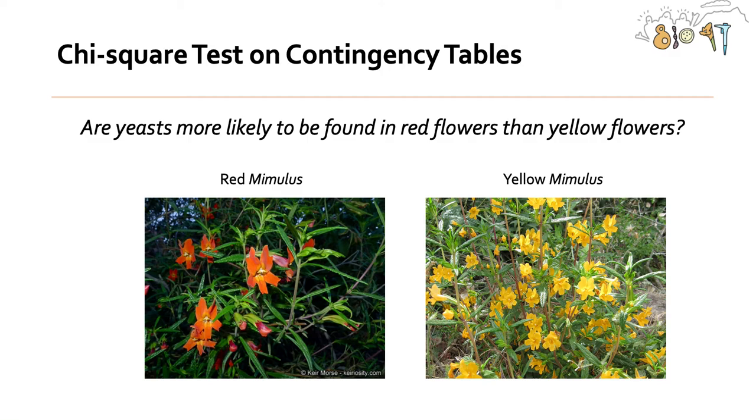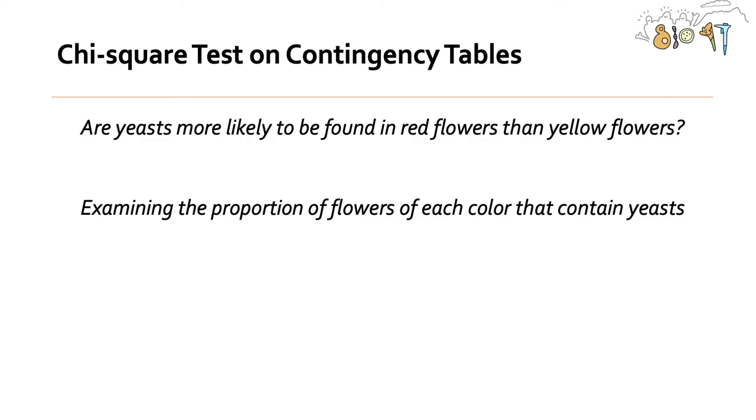Bet you didn't know that there are both red and yellow Mimulus flowers. There are, and the reason why we ask this question is normally when we have our in-person class you would be going out on campus and finding red and yellow Mimulus near the STLC and plating for yeasts. But we're not doing that, but I'm just telling you that there's red and yellow Mimulus and they are growing near the STLC right now.